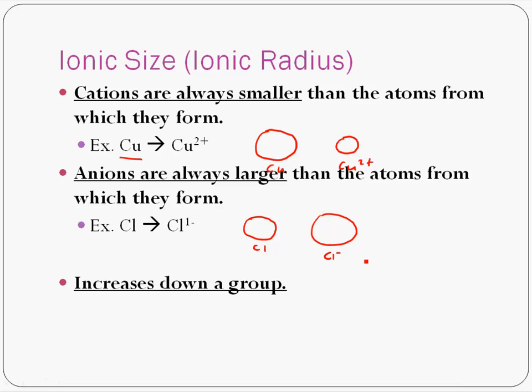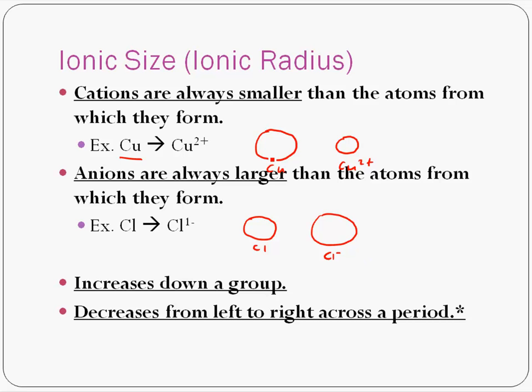Now, other than that, ionic size tends to increase going down a group and decrease going from left to right. I call that the snowman principle. Particles get bigger as you go down the periodic table. And when you push that snowman over, give him a little nose there, you see that the particles get smaller as you go through the periodic table.